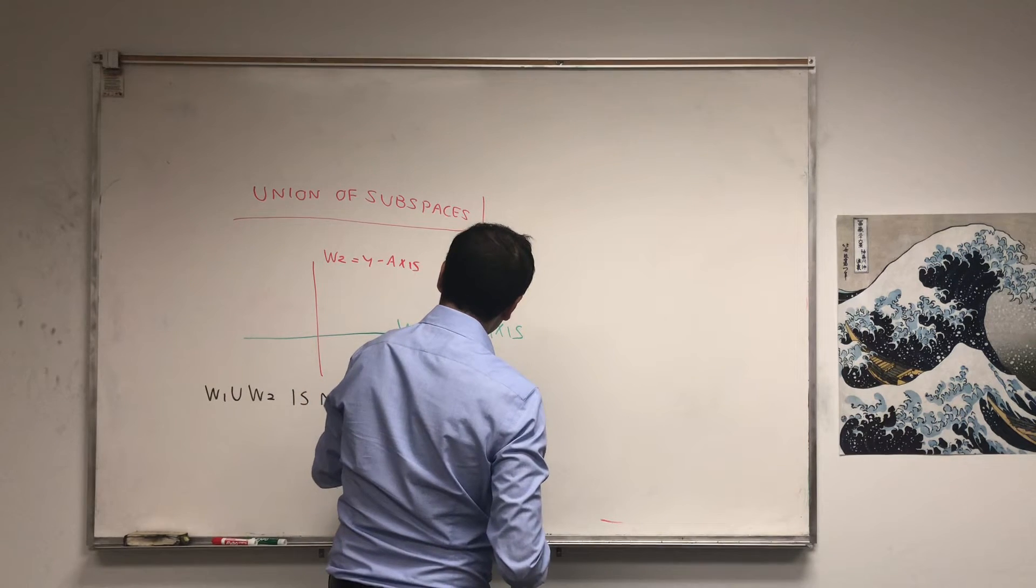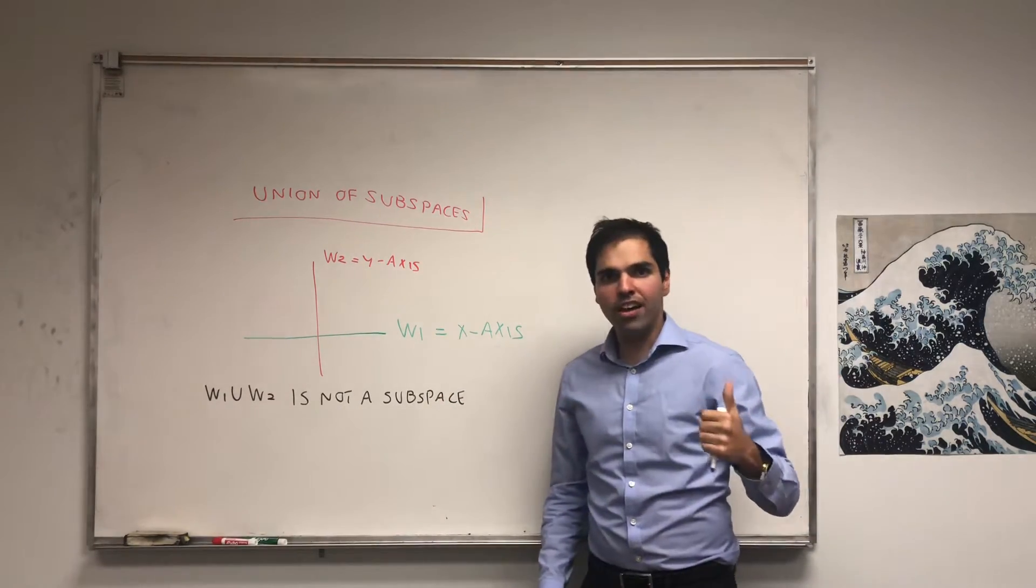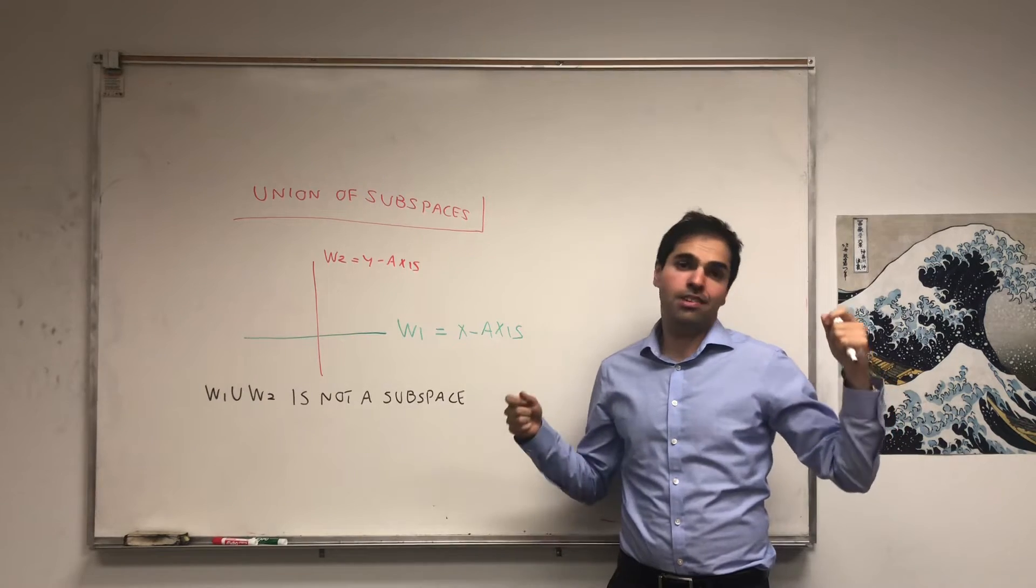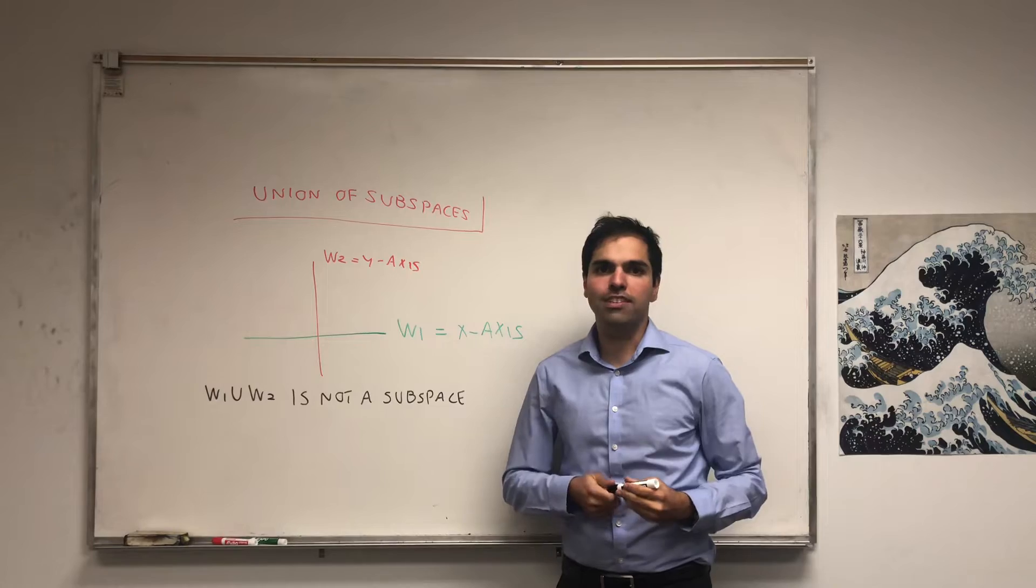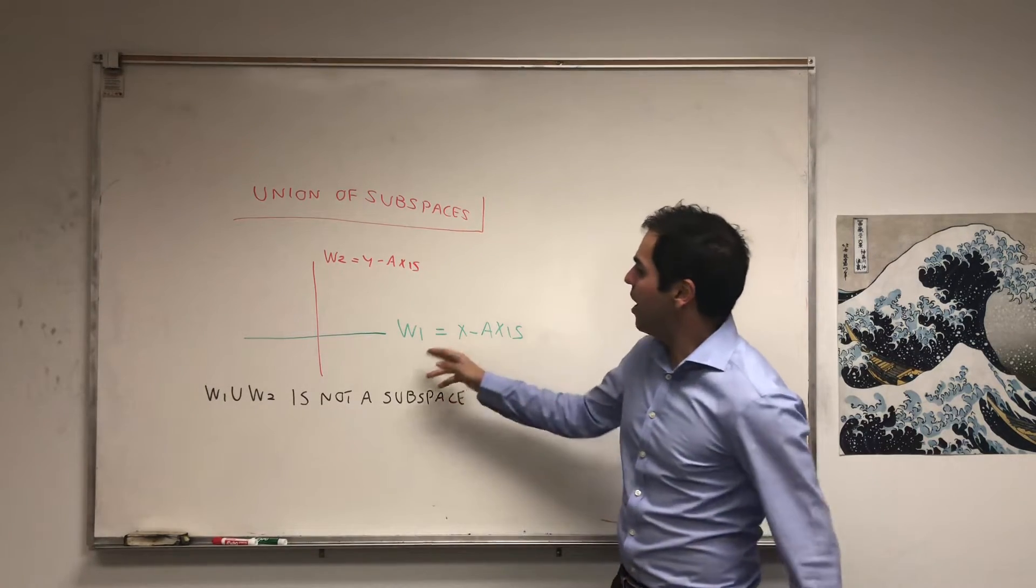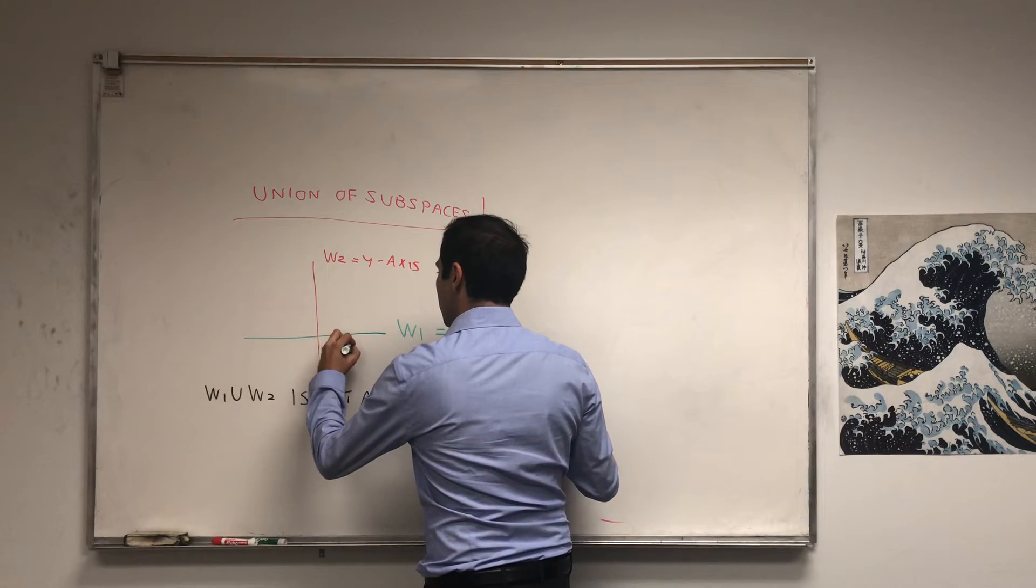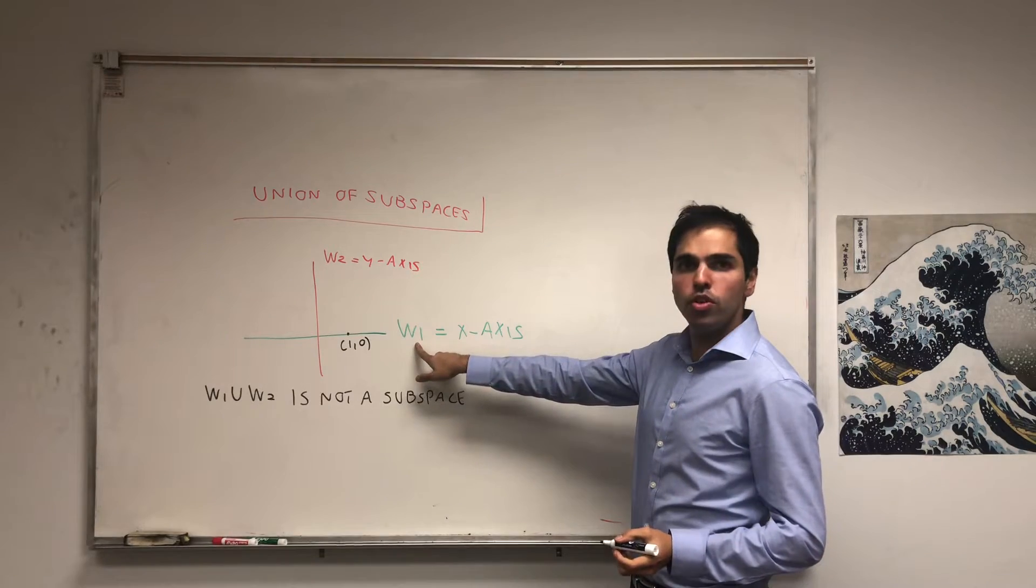And why is that true? Well, what does a subspace mean? It means the zero element is in it, that the sum of two elements in this space is still in this space, and that the scalar multiple of this space is still in that space. In particular, consider the following element. Well, one, zero, it's in W1.